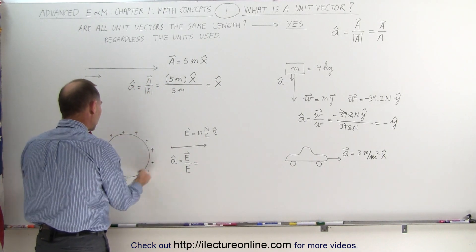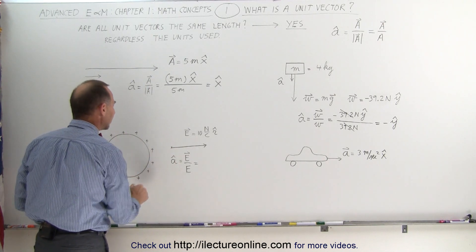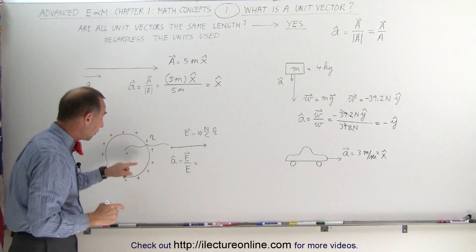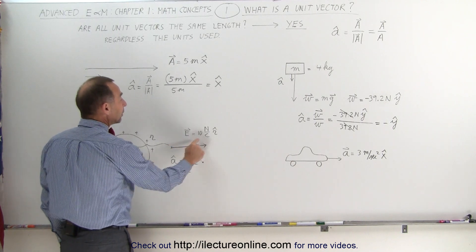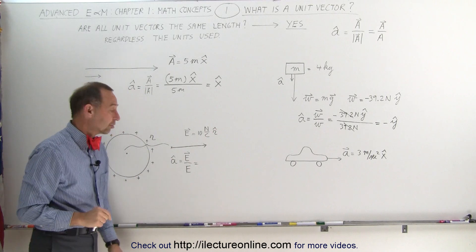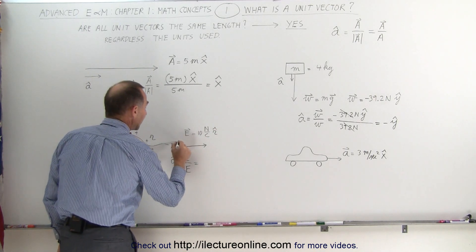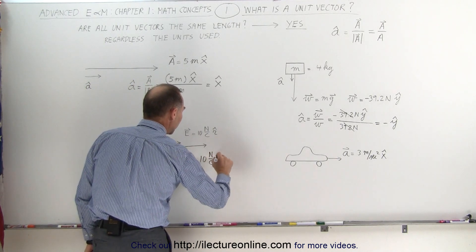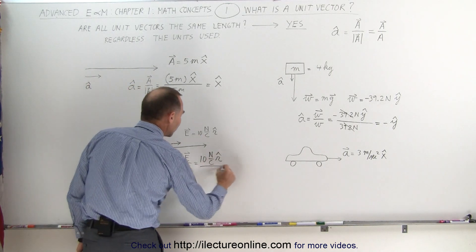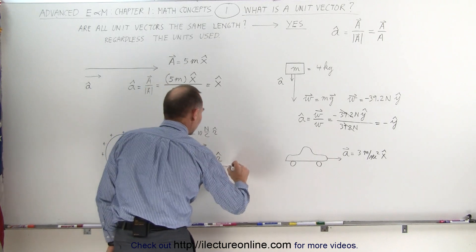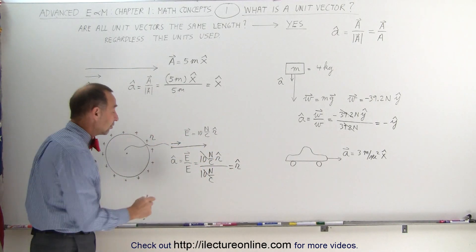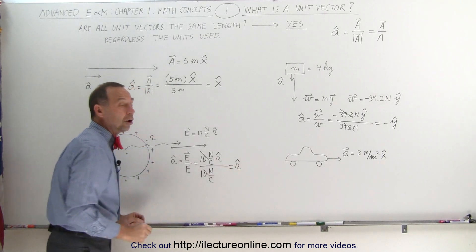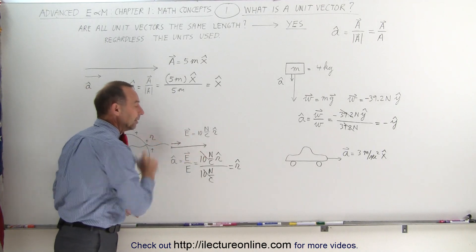Now consider an object with charge on its surface. We want to know the electric field at a location some distance away from the center — distance r in spherical coordinates. The electric field strength at that point is 10 newtons per coulomb in the outward radial direction. The unit vector there would be in the same direction with length one. Taking the electric field — 10 newtons per coulomb in the r direction — divided by its magnitude of 10 newtons per coulomb, those cancel out, leaving us the unit vector r pointing radially outward with magnitude equal to 1.